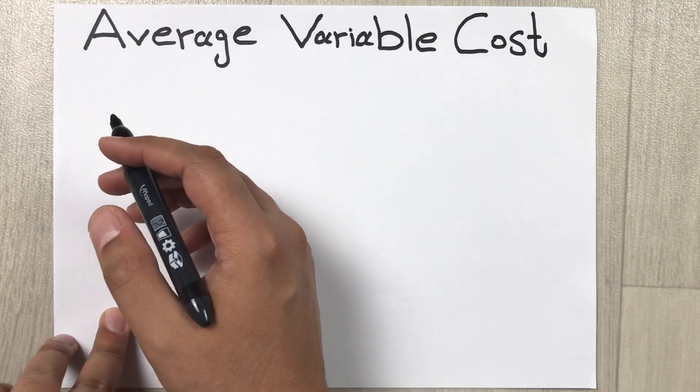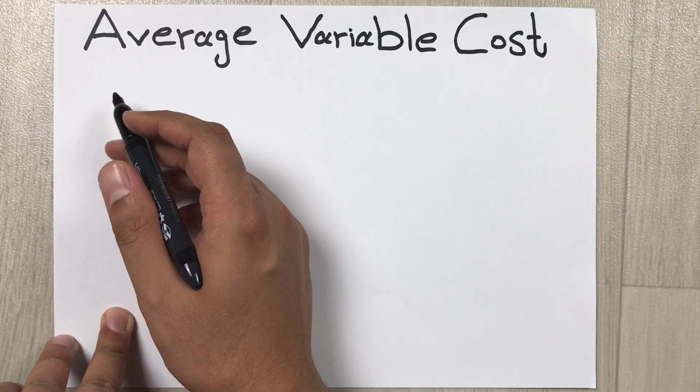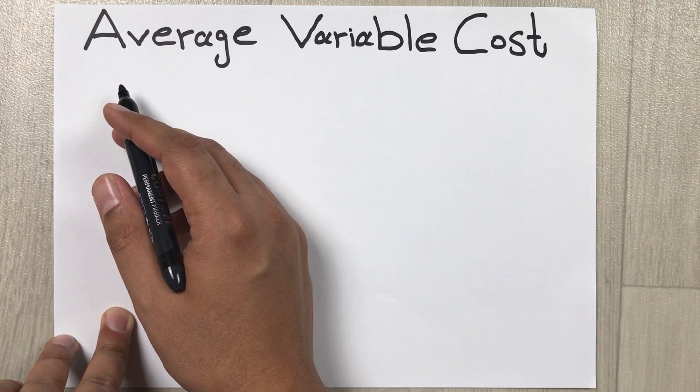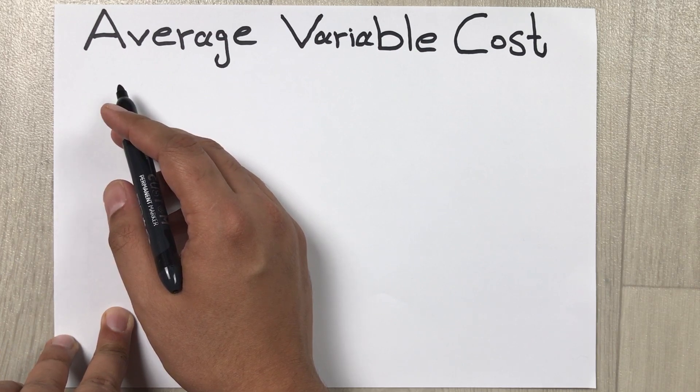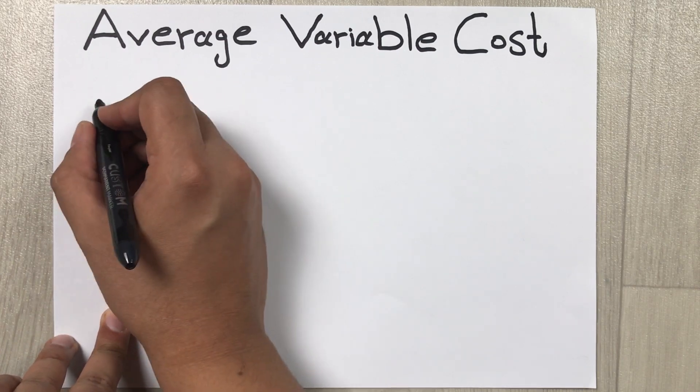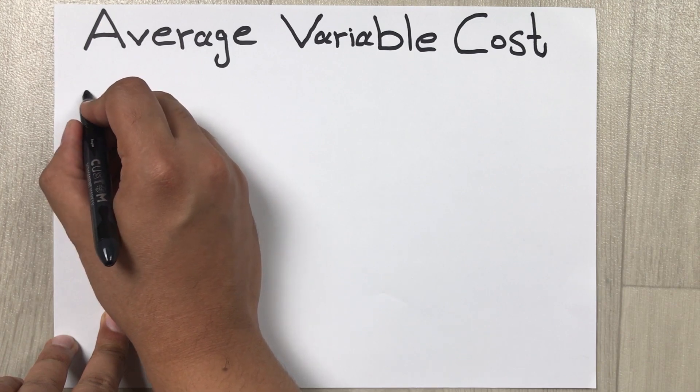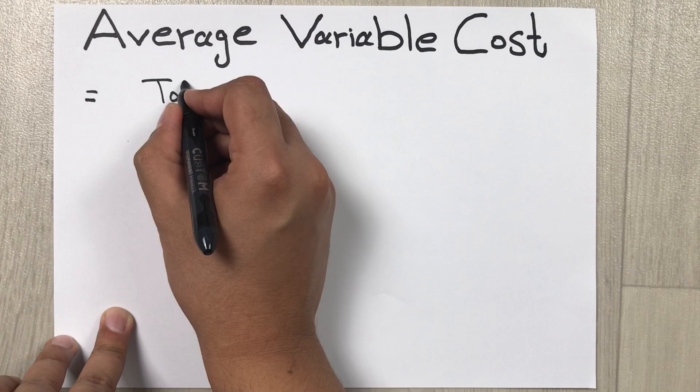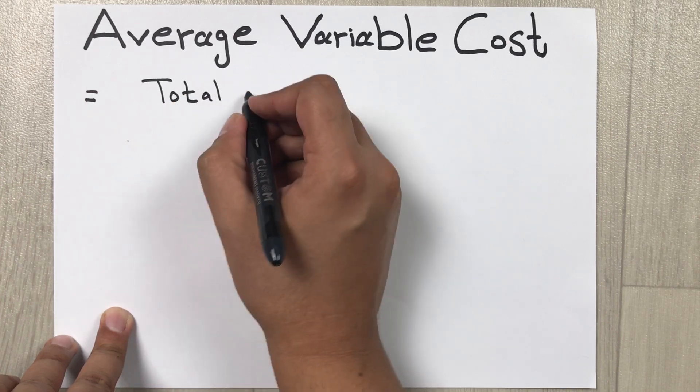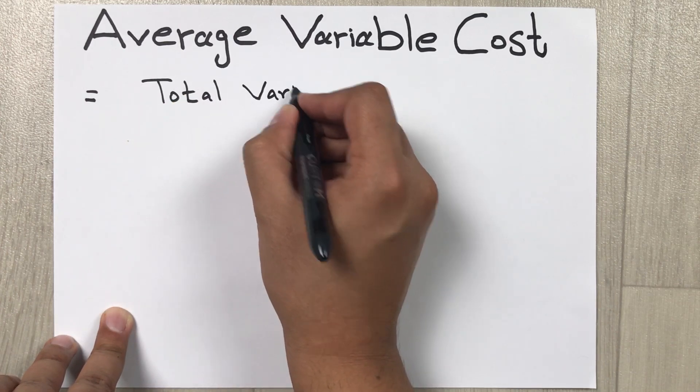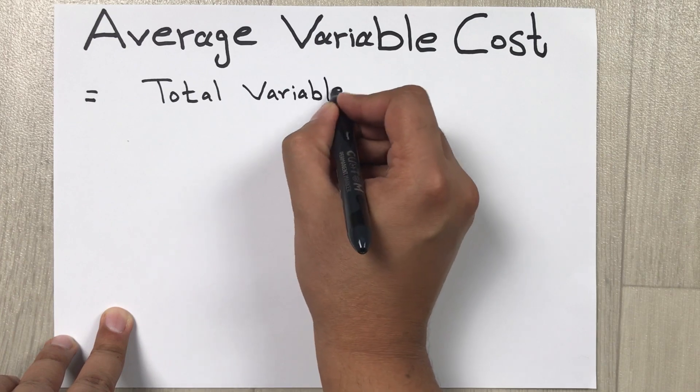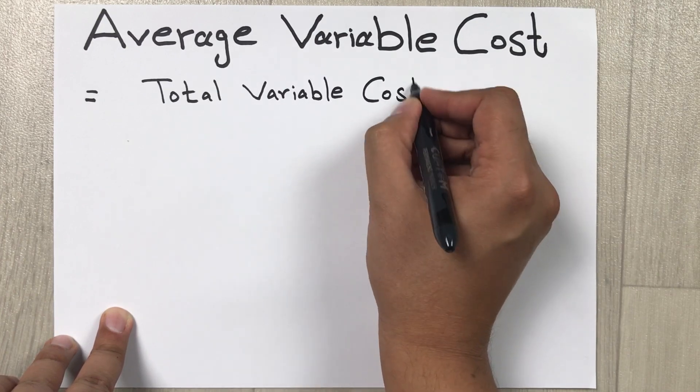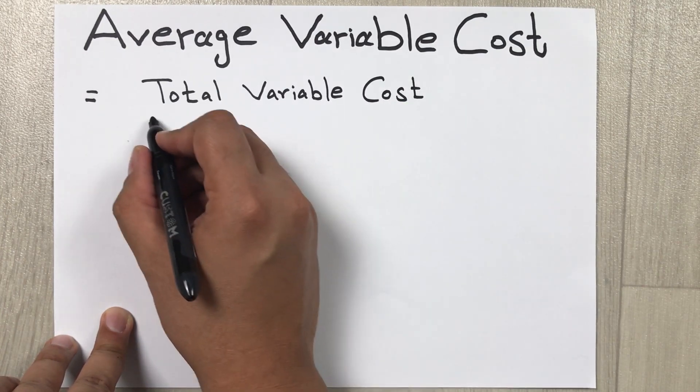Hello guys, I hope you are doing really well. In today's video I am going to show you how to calculate average variable cost. The formula to find out the average variable cost is equal to total variable cost divided by total quantity.